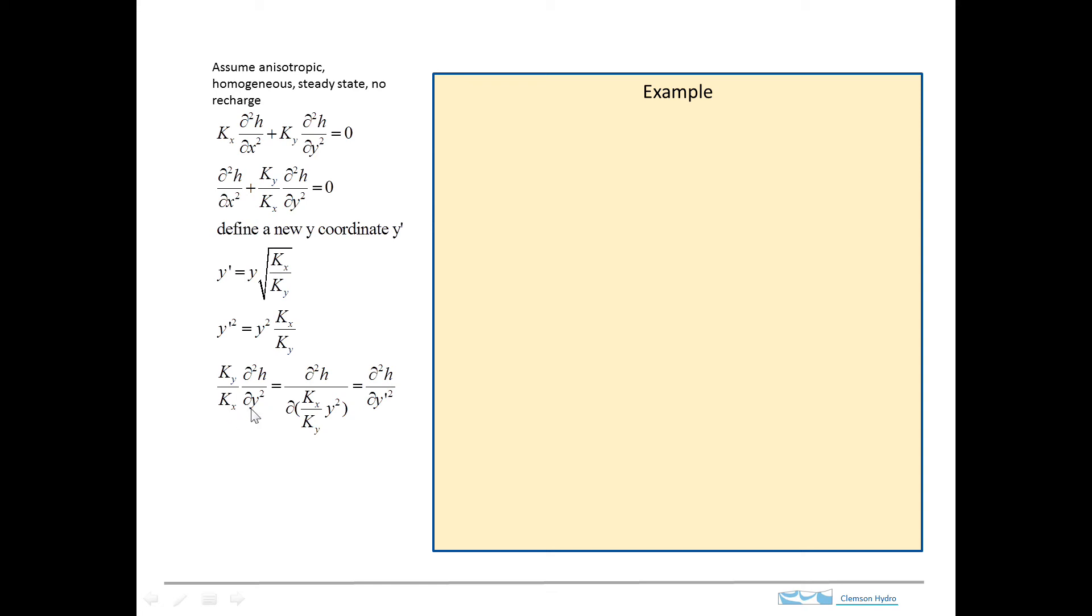And then we're going to recognize that we can write this ratio here as Kx over Ky in the denominator. And we can bring it inside right next to the y squared. So this term is equivalent to this term, where we're saying the derivative of y squared times this is just a constant. The result is that we see this is the same as the term that we defined above as y prime squared.